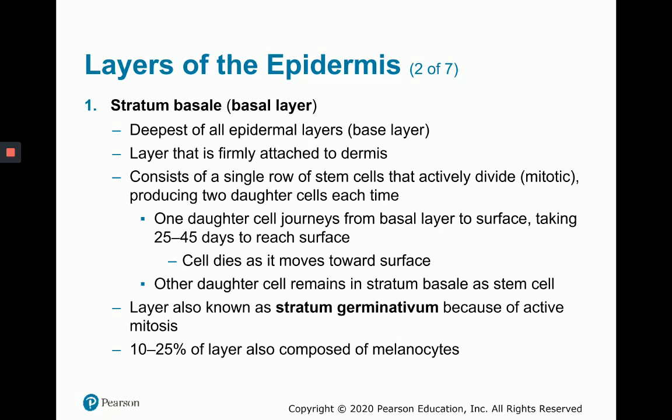One daughter cell from the actively mitotic stem cells in the basal layer journeys from this layer to the surface about every 25 to 45 days. As cells move upward, they die because they get too far from the blood vessels and nutrients in the dermis. One daughter cell stays near the stratum basale and continues to be a stem cell. The stratum basale can also be called the stratum germinativum, since these cells can perform mitosis. About 10 to 25% of this layer is composed of melanocytes.